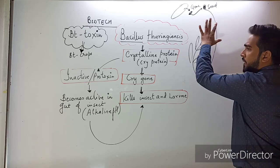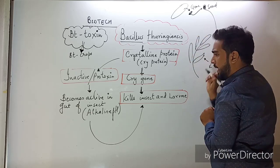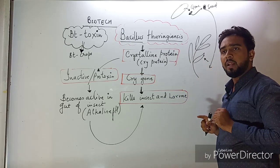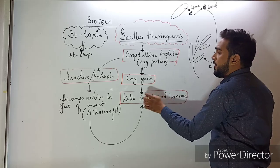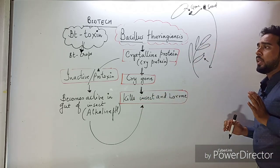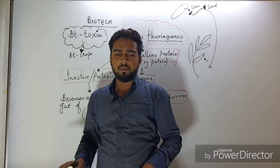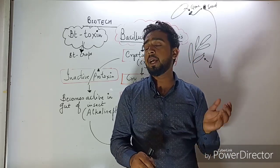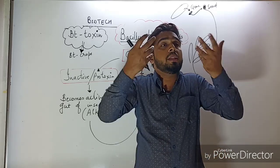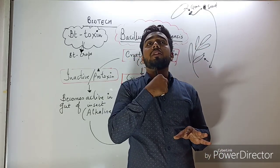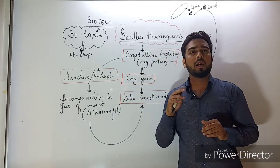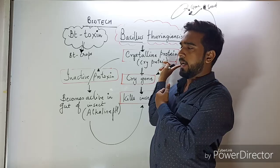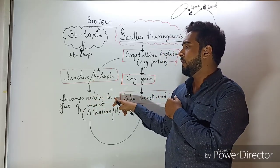Whenever an insect comes on the surface of the leaf and starts eating, the cry protein — which is injurious to the insect's health — is ingested. The cry protein is actually an inactive protein called protoxin, but it becomes active in the alkaline pH of the insect's gut, since the pH there is higher than 7. This kills the insect and larva.